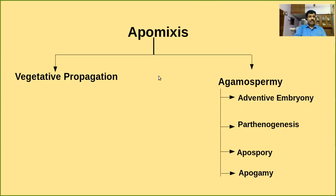Vegetative propagation means the formation of a plant from the vegetative part of the plant — like root, stem, buds, etc. The detailed aspects of vegetative propagation were covered in chapter one. Now we are going to discuss different types of agamospermy: adventive embryony, parthenogenesis, apospory, and apogamy.